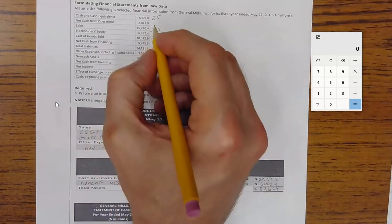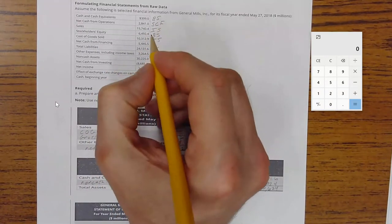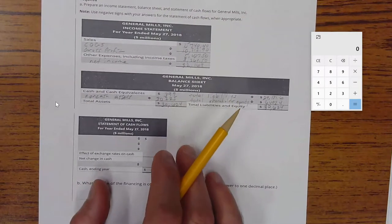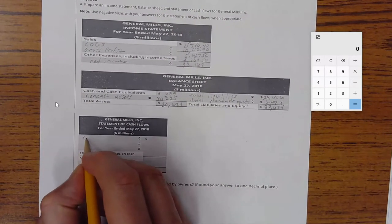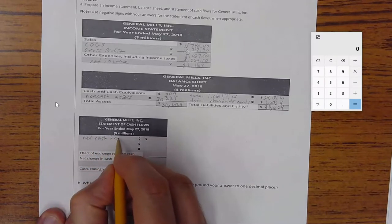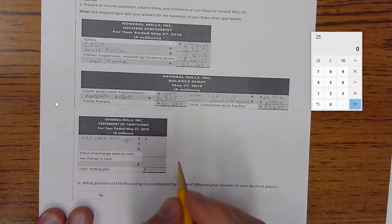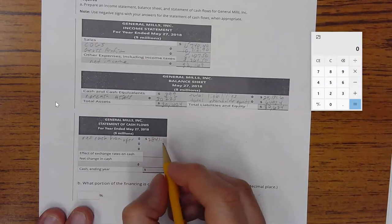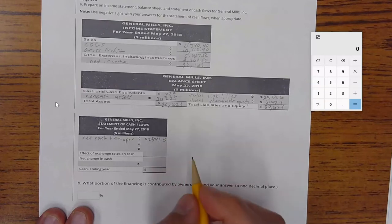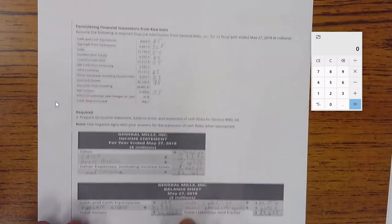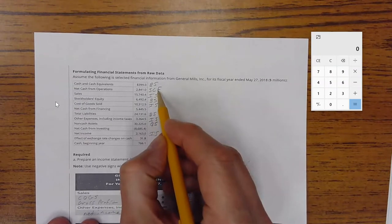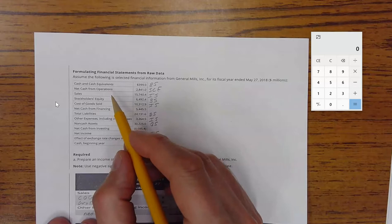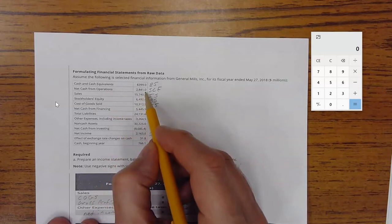I'm going to abbreviate this as statement of cash flows or SCF. And then this says net cash from operations. I'm going to put that net cash from operations, and that figure was 2841.0. Then we labeled that again up here as a statement of cash flow item. There was a whole lot of work that went into getting to this net cash from operations, but we're just getting started. Taking the final number is fine for our purposes.